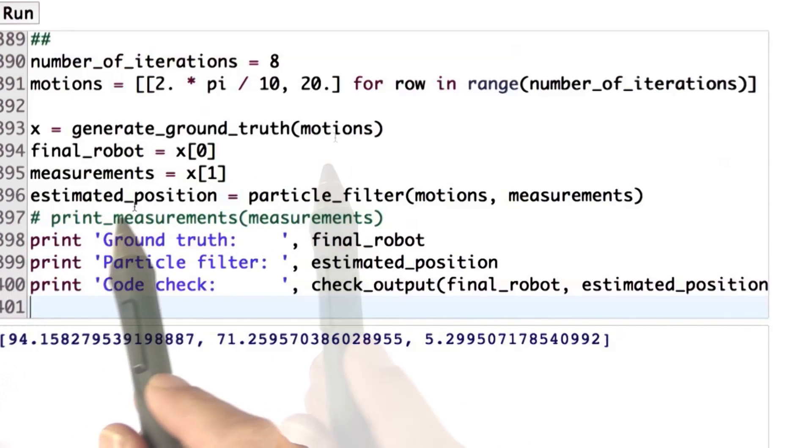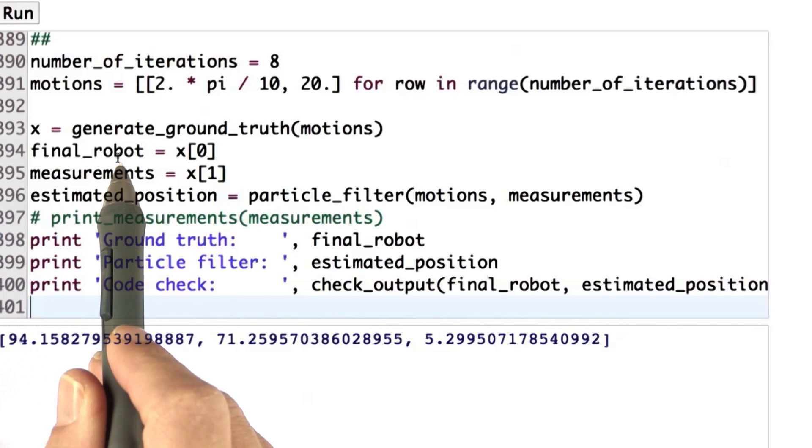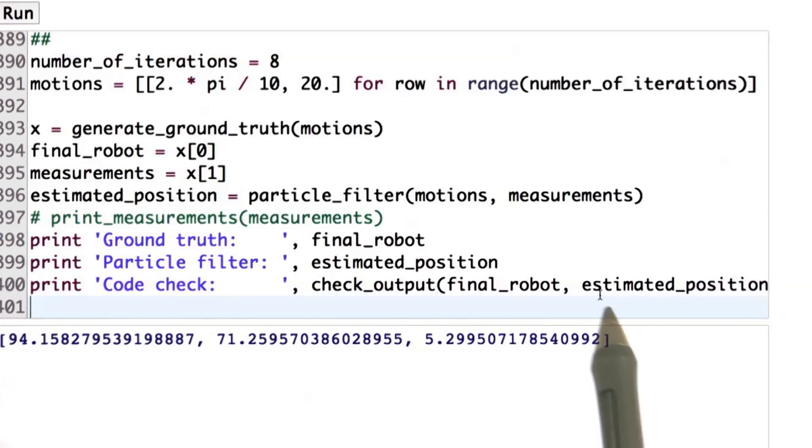Then you run your particle filter over here, and the function check output down here compares the final robot position, the ground truth position, with your particle filter position, estimated position from here, and gives us a single flag whether this is all correct. So let me just do this.